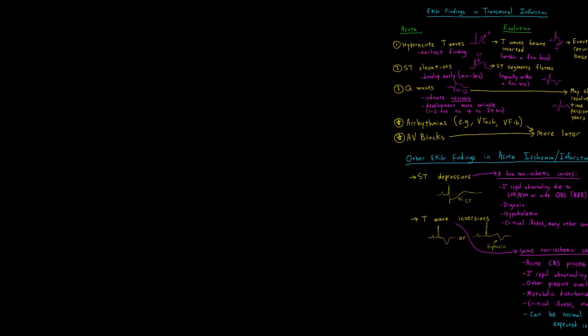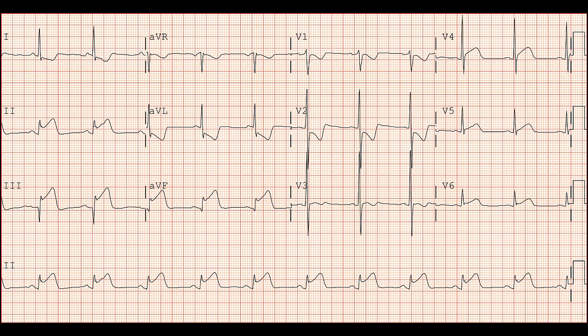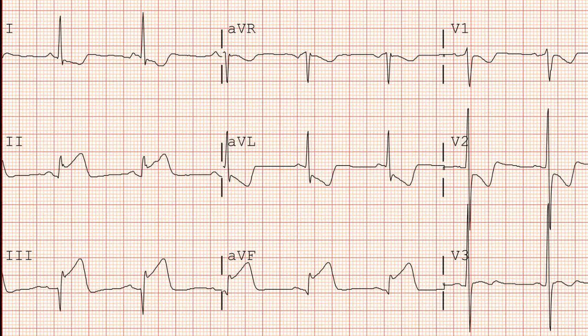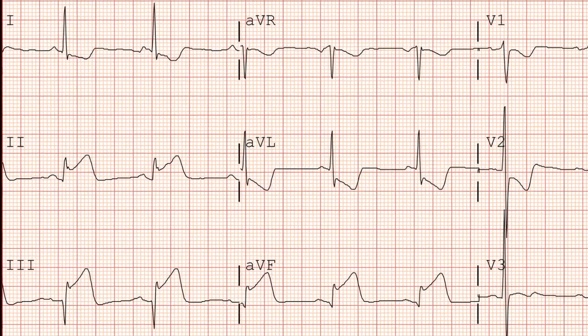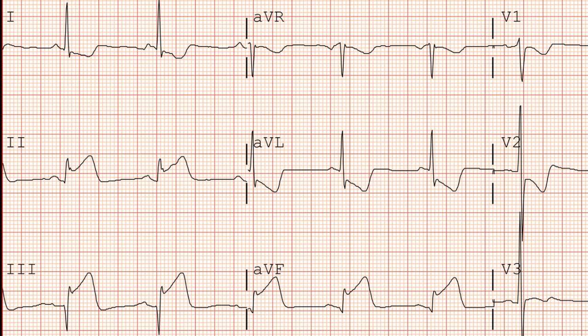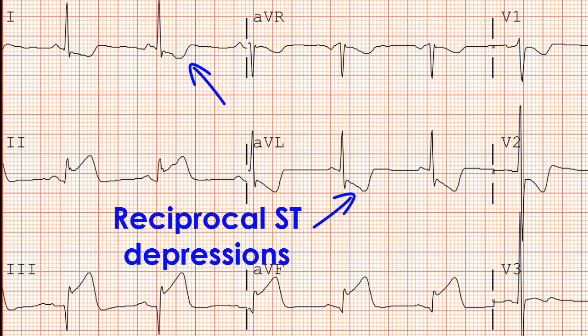Let's look at an example EKG. Eyeballing this tracing, you'll notice that there are prominent ST elevations in some leads and deep ST depressions in other leads. When you have both ST elevations and ST depressions, the ST elevations — which are more concerning — are usually the primary process. This is an example of an acute inferior ST elevation MI. When you call something an MI, you should mention where it's localized. This is an inferior MI because the ST elevations are most prominent in leads 2, 3, and AVF. The ST depressions in the lateral leads 1 and AVL are what we call reciprocal ST depressions.